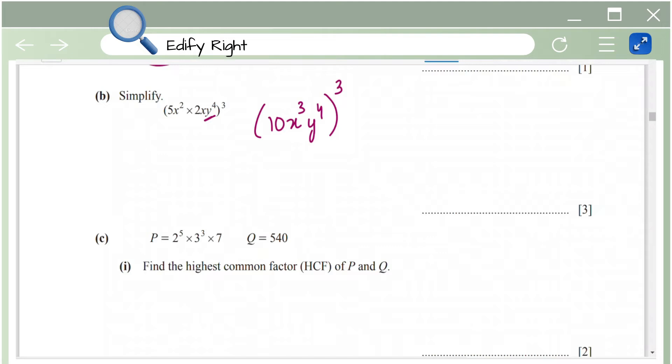Take the power 3 and apply it to every single variable and number inside the bracket which is basically 10 power 3 into x cube power 3 into y power 4 power 3. This is 10 power 3 is 1000 x power 9 y power 4 into 3 which is 12. So this is how you simplify.